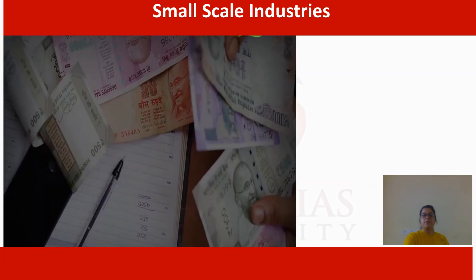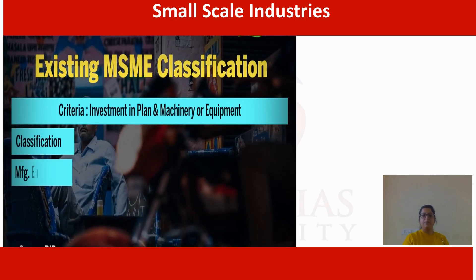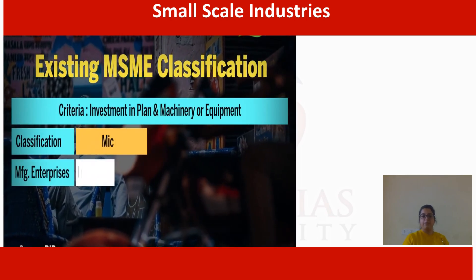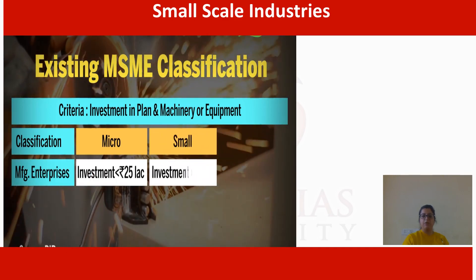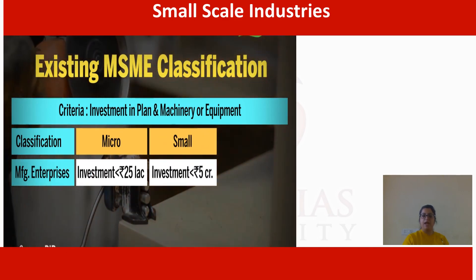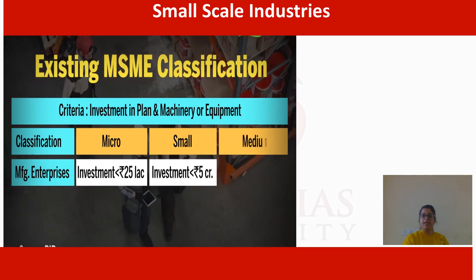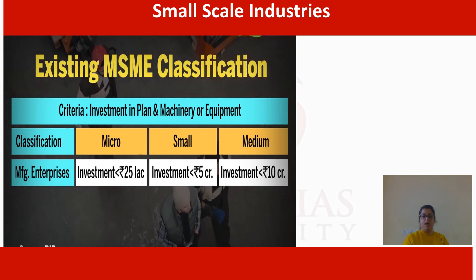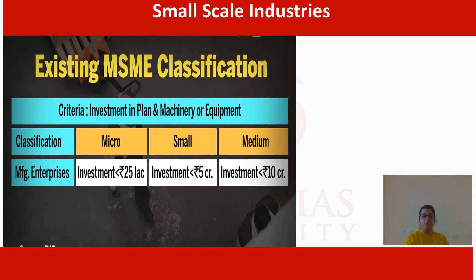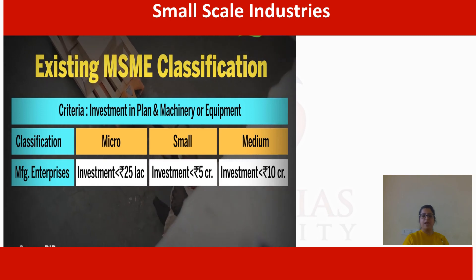Under the MSME classification for manufacturing enterprises: in the case of micro enterprise, the investment is within 25 lakhs; for small enterprise, the investment is within 5 crore; and for medium enterprise, the investment is within 10 crore. This covers the distribution of MSMEs in the manufacturing sector.